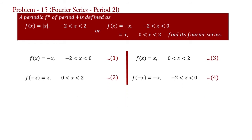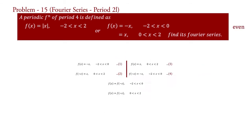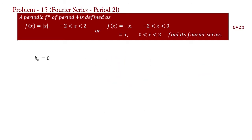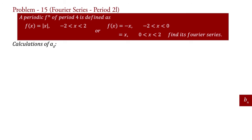From equations 1 and 4, we find that f(x) = f(−x) in the interval −2 to 0. Also from equations 2 and 3, we find that f(x) = f(−x) in the interval 0 to 2. Therefore the given function is an even function, and so the coefficient b_n = 0. We will find coefficients a_0 and a_n to obtain the Fourier series.